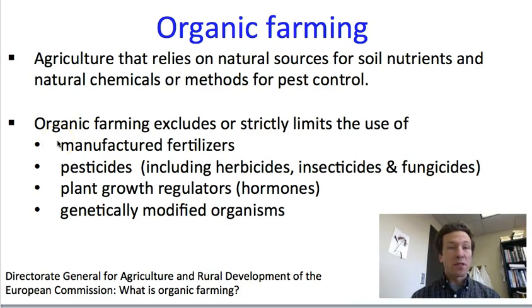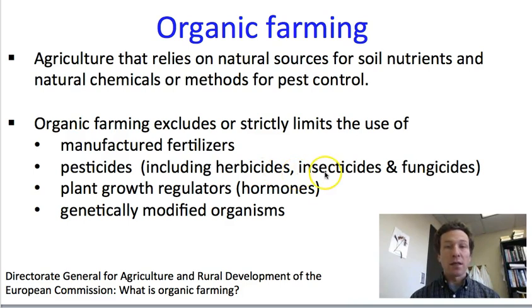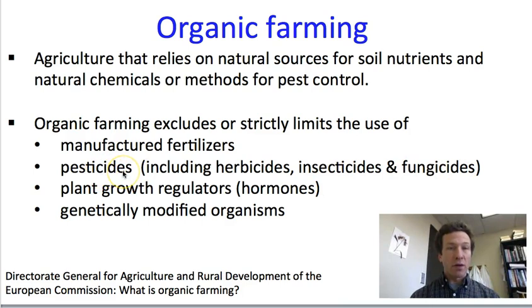These would include the use of manufactured fertilizer from synthetic sources, the use of manufactured or synthetic pesticides. The term pesticide includes things that kill other plants — those specifically are herbicides — chemicals that kill insects, those are insecticides, and chemicals that kill fungi, those are fungicides. Synthetic forms of any of those are excluded in organic agriculture.